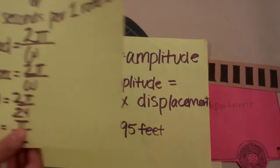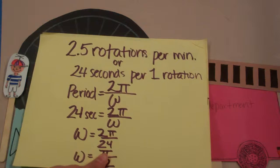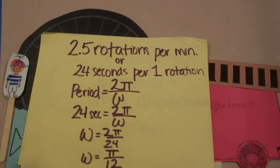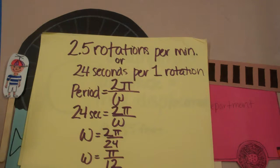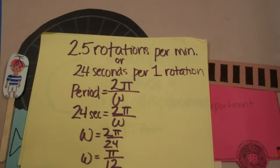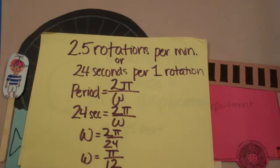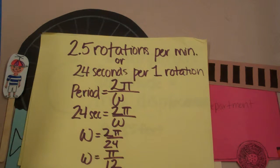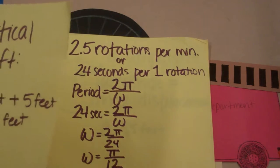They were able to find omega because, according to the Ferris Wheel operator, the Ferris Wheel was able to make 2.5 full rotations per minute. Knowing that the period was 2π over omega, they plugged in 24 seconds for the period and solved for omega, giving omega equals 2π over 12.